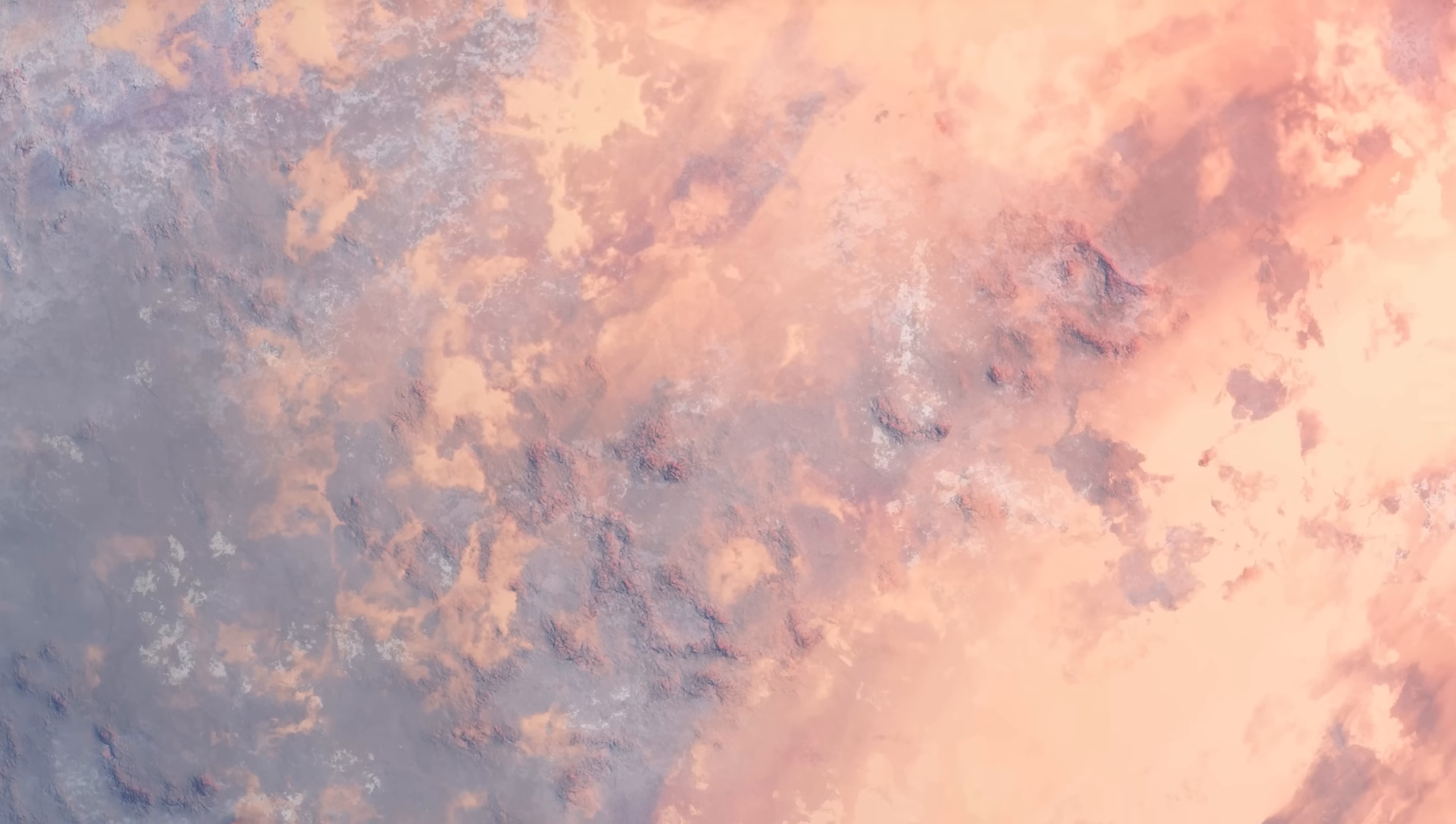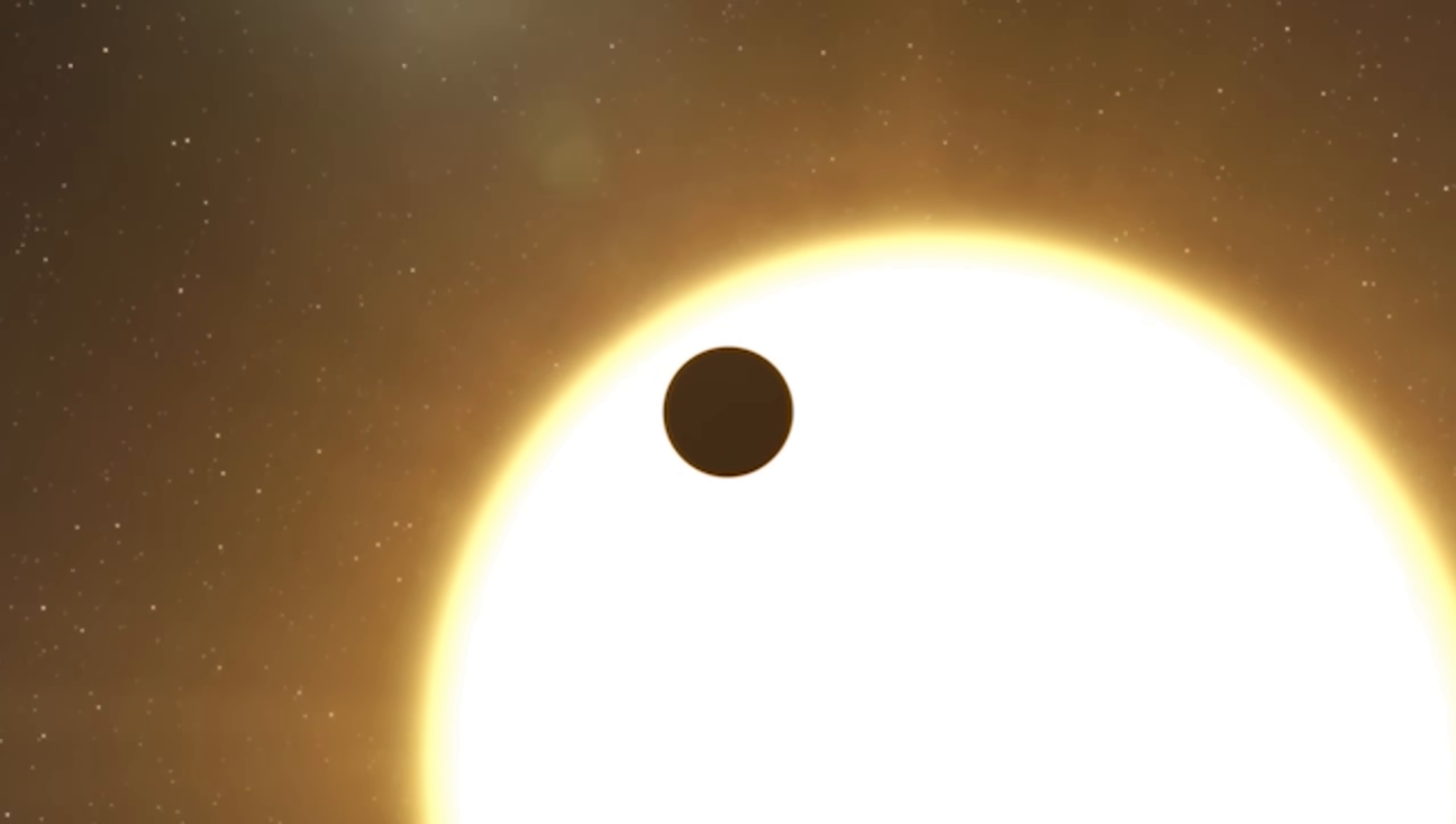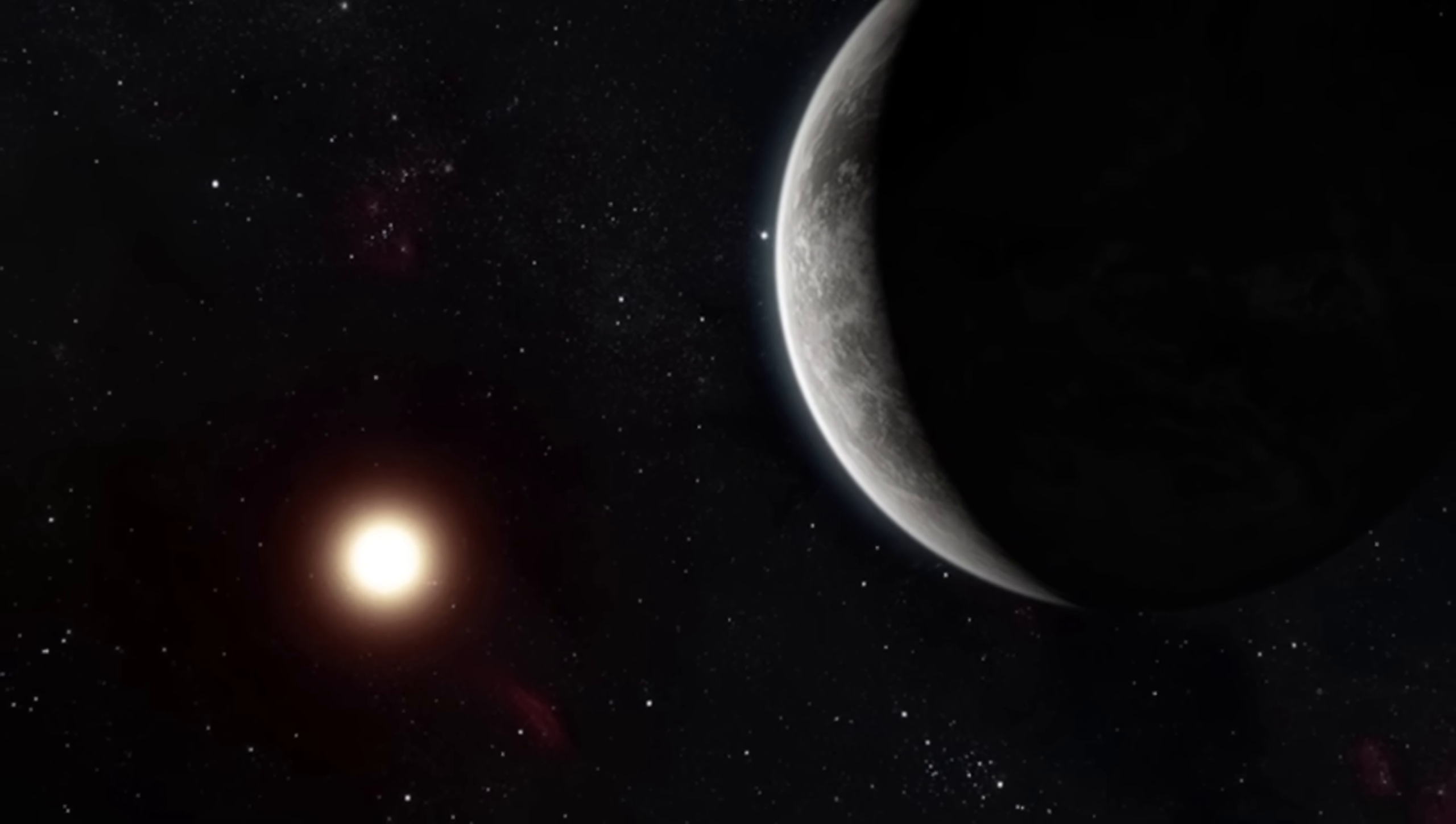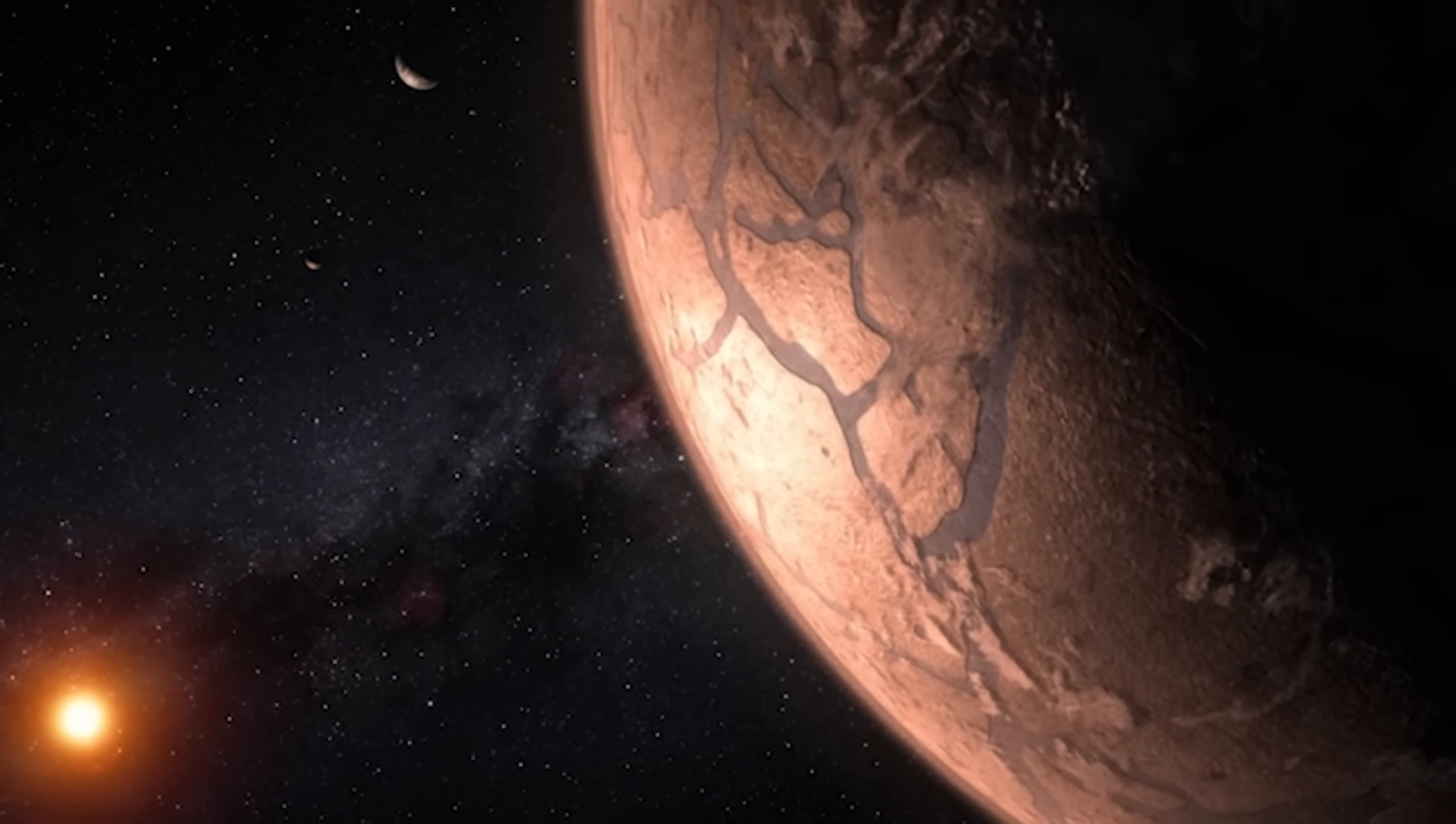Once humankind reaches Proxima Centauri, there would be a whole star system to discover. However, how many more planets similar to ours are there? Our universe is full of exoplanets that are just waiting to be found. These planets vary greatly in size and shape. Some are enormous gas giants, while others have features similar to Earth.